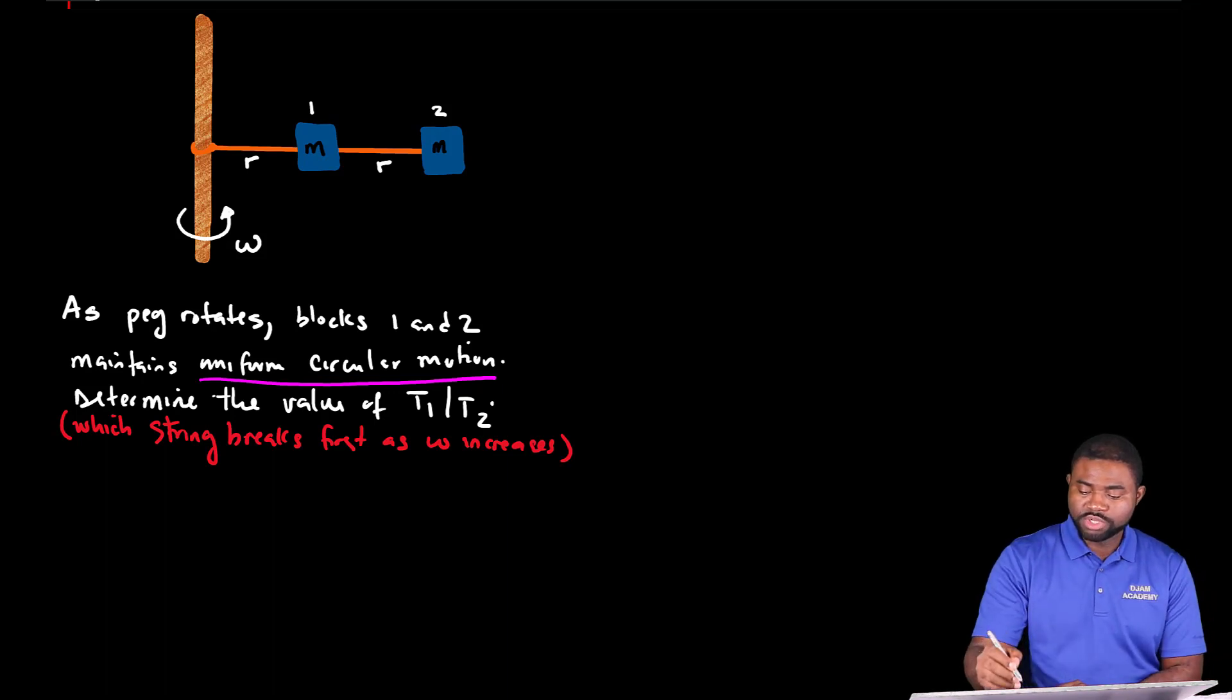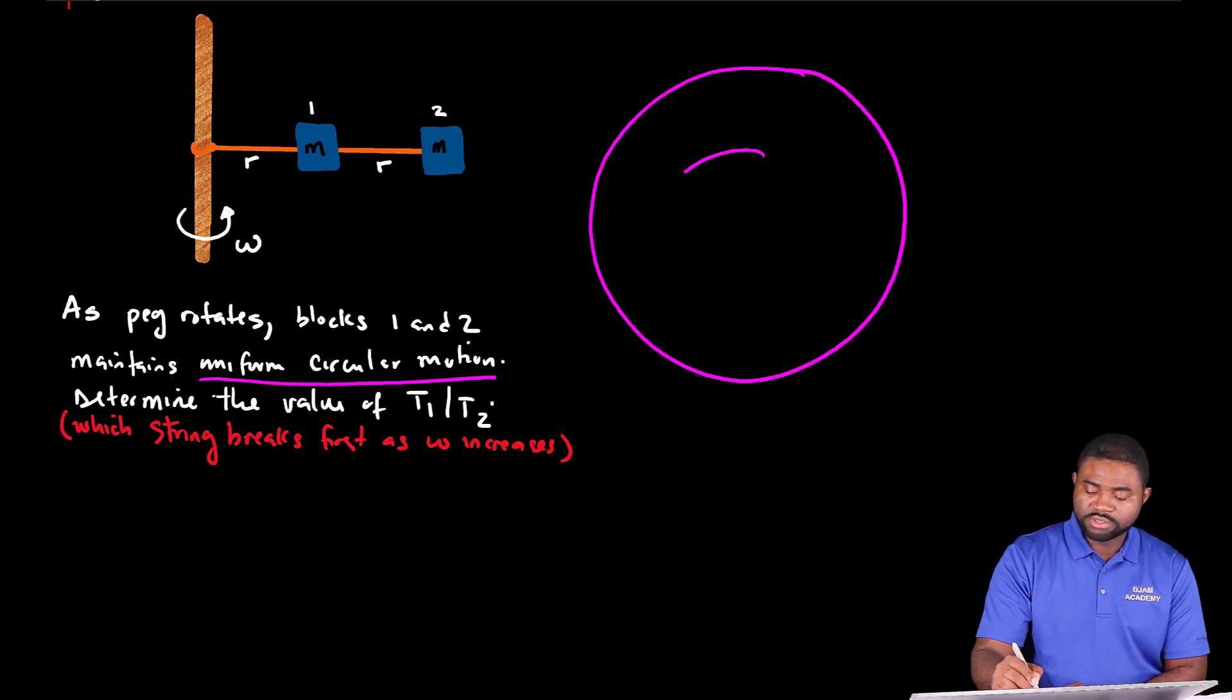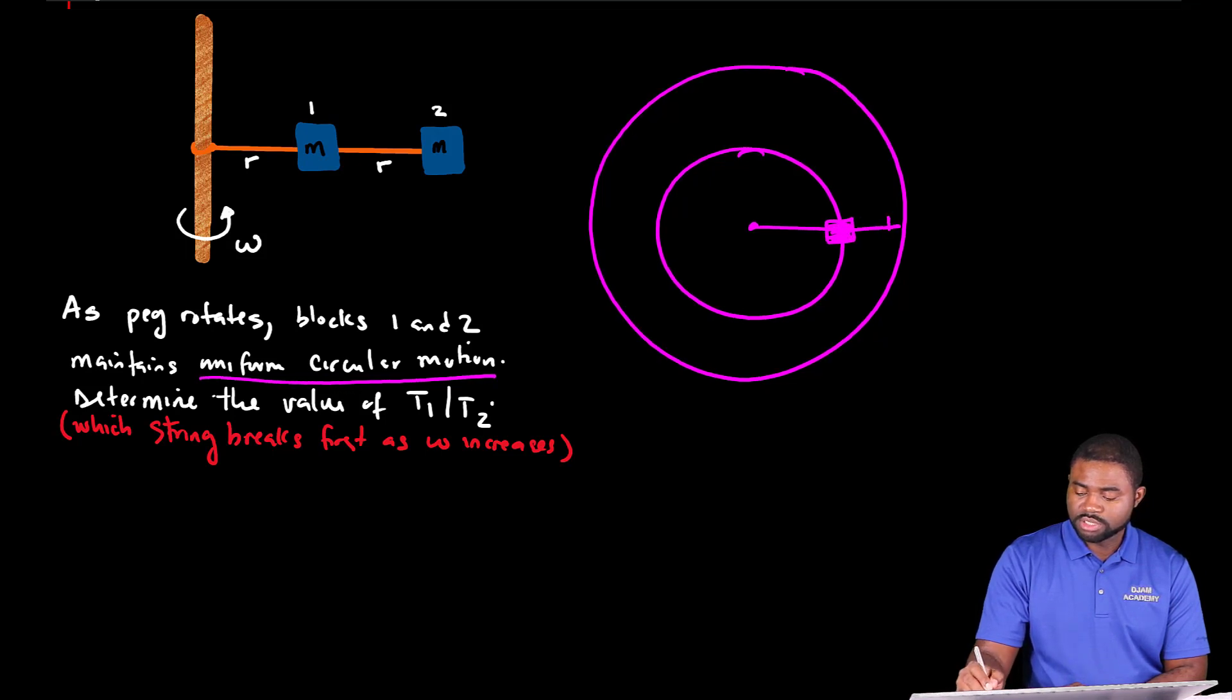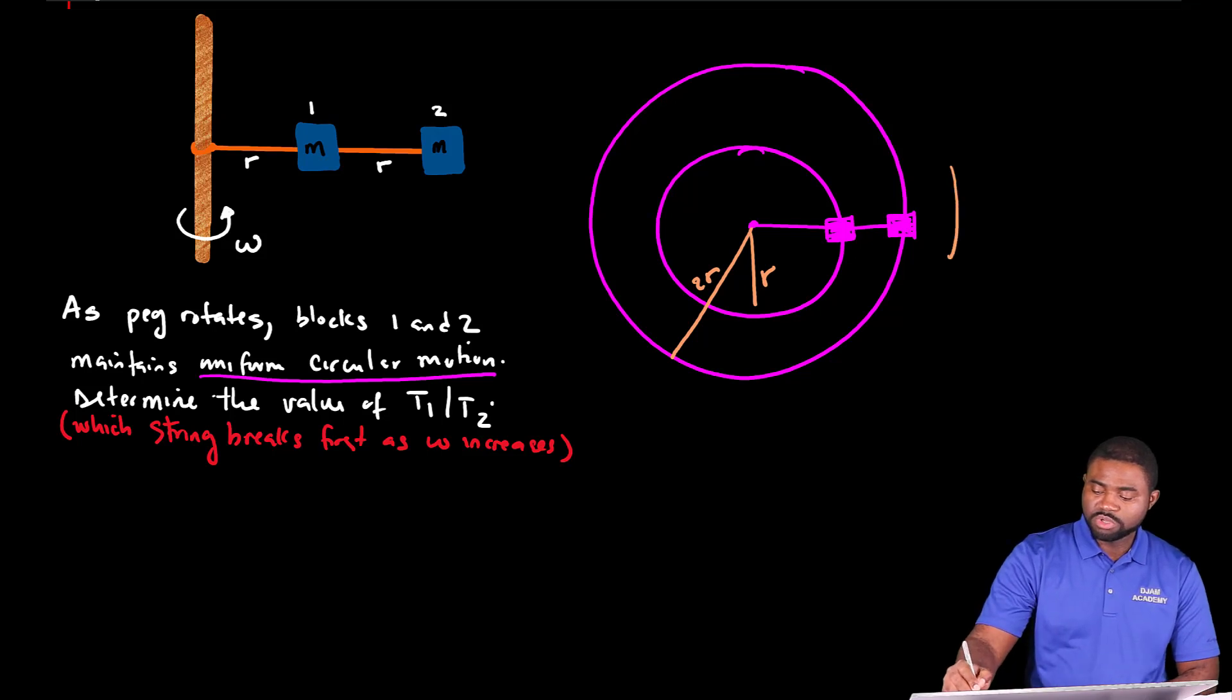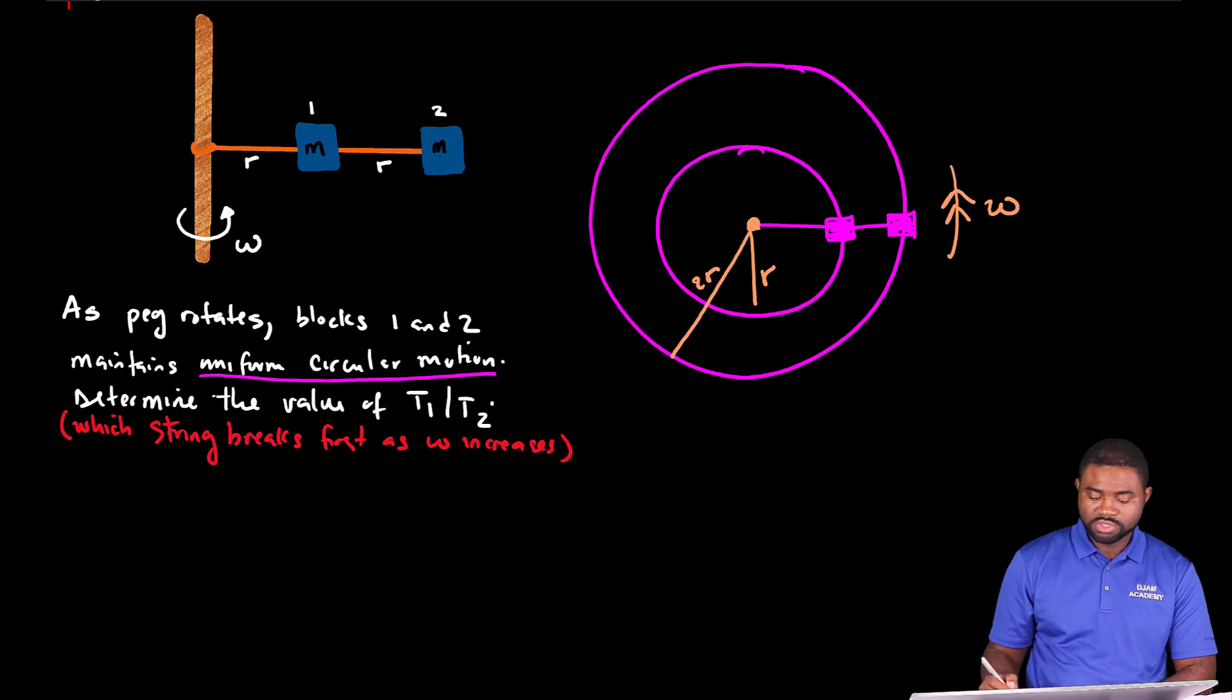Another way to show this in a diagram will look like this. You have two blocks, one on an outer circle and one in an inner circle. This is block one and that is block two. The radius from here to here is R and the radius from here to here is 2R. So you have the two blocks rotating about the center with an angular velocity omega.